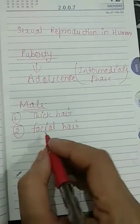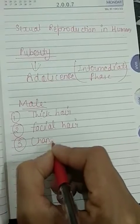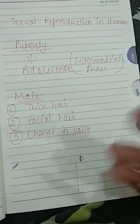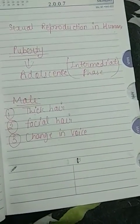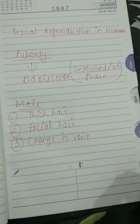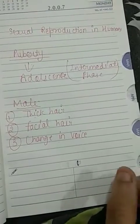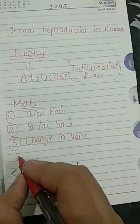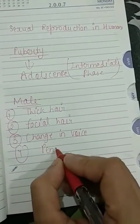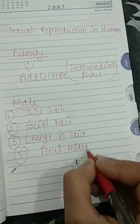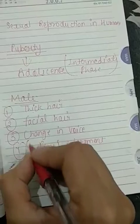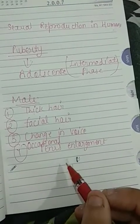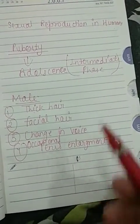In males, some of the changes during puberty include: thick hair growth under armpits and in the genital area, which was not present earlier; facial hair — the appearance of beard and mustache; change in voice, where a cracky voice develops. The voice of a small four or five year old kid is quite different from the voice of a boy who is 16 or 17 years old. There is also occasional enlargement of the penis, which is the primary male reproductive organ.